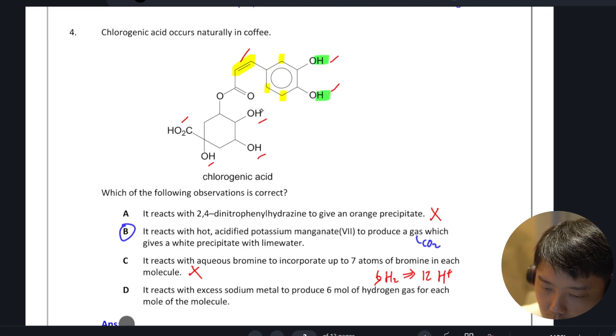We have one, two, three, four, five, six, that's all. We don't have 12 H+. So option D is incorrect. Our answer here is B.